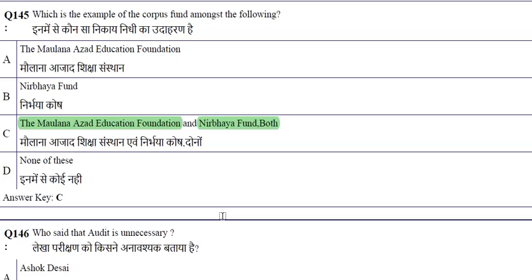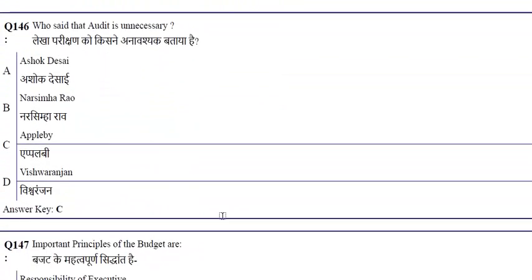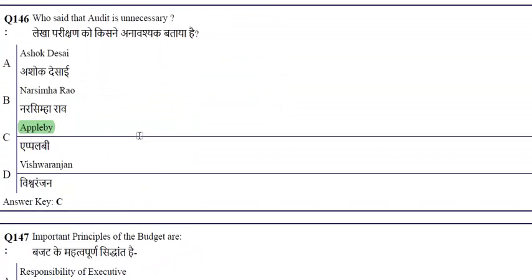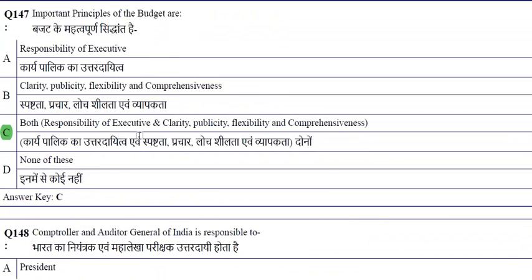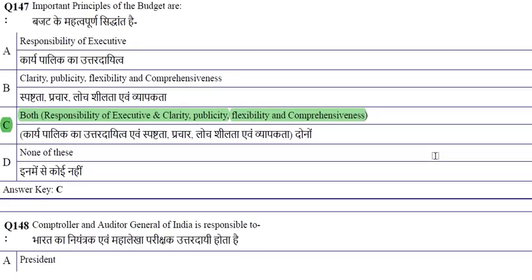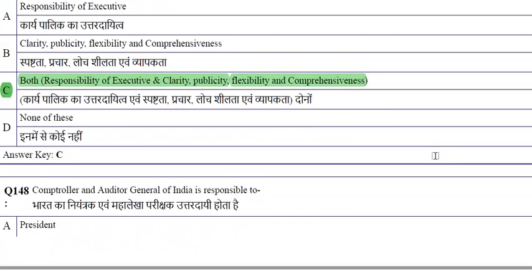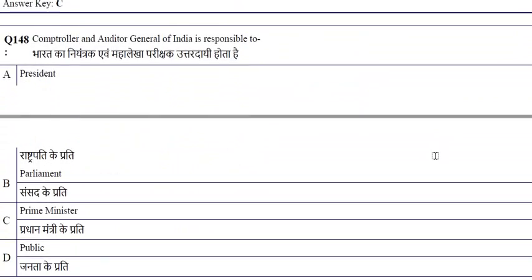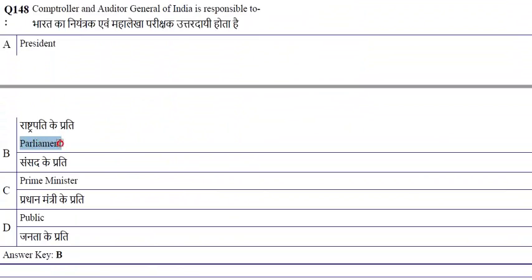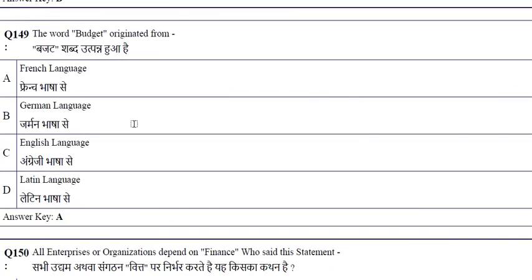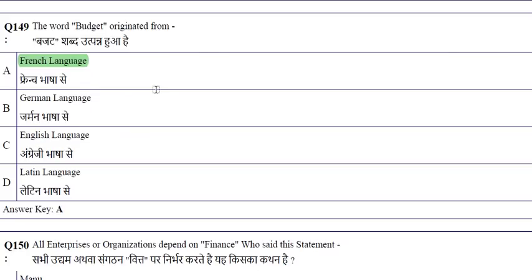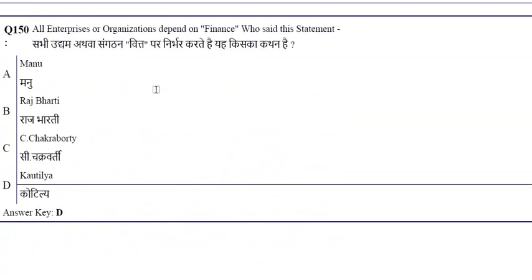It was said by Appleby that audit is unnecessary. Important principles of the budget are: responsibility of the executive, clarity, publicity, flexibility, and comprehensiveness. The Comptroller and Auditor General of India is responsible to Parliament, and impeachment of CAG is like that of Supreme Court judges. The word 'budget' originated from the French language. Kautilya (Chanakya) said that all enterprises and organizations depend on finance.